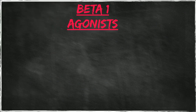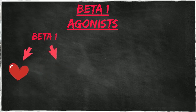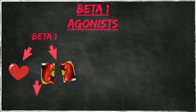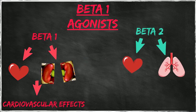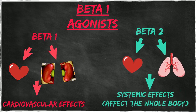Now for the beta-agonist drugs. Remember that beta-1 receptors are only present in the cardiovascular system and juxtaglomerular cells of the kidney. Therefore, effects of drugs in this category will yield predominantly cardiovascular effects. Beta-2 receptors are present in numerous locations including the heart and lungs. Therefore, this category will have more systemic effects when compared to the beta-1 receptor agonist drugs.